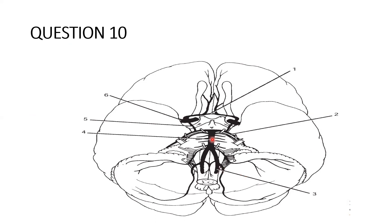Number four is the basilar artery, lying on the pons in the groove called the basilar groove. Number five, coming off the posterior cerebral artery and joining the internal carotid artery, is the posterior communicating artery. Number six is outside the Circle of Willis — this is the middle cerebral artery, a branch of the internal carotid artery.